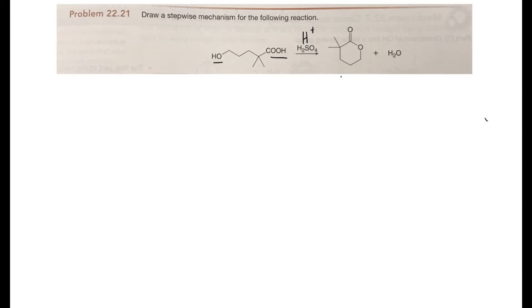A cyclic ester is called a lactone, in case you're interested in knowing what type of functional group that is. So let's go ahead and do the curved arrow reaction mechanism.